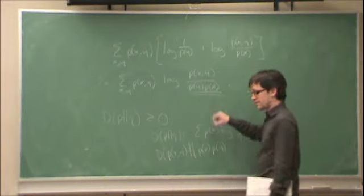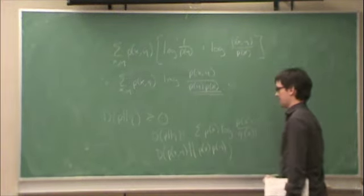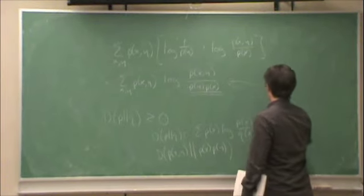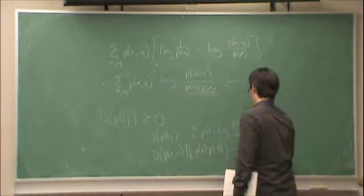So if you let q be this, then that's okay. Then that and this are equal, and we know that this is greater than or equal to zero.